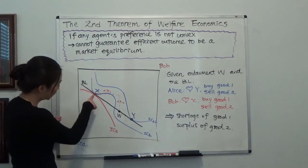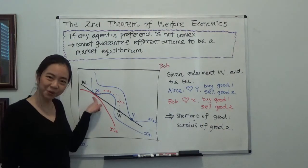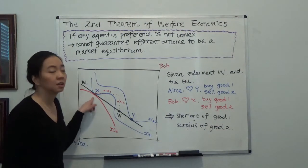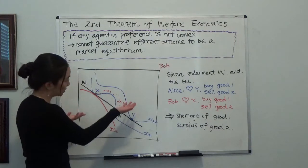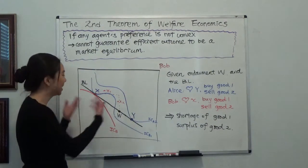And at point x, you can see that is an efficient outcome, because at point x, we cannot improve Alice's utility without hurting Bob, and vice versa.